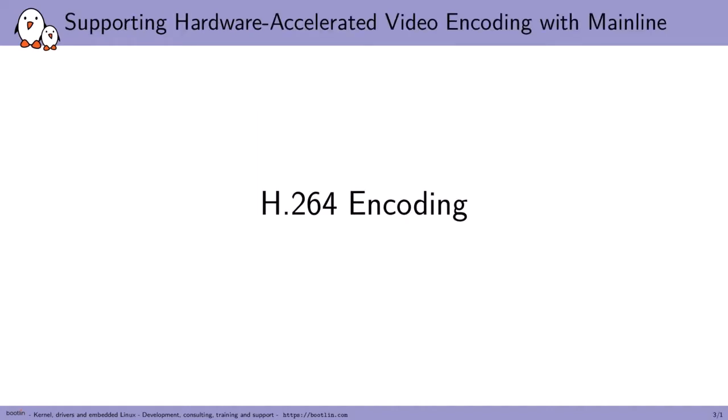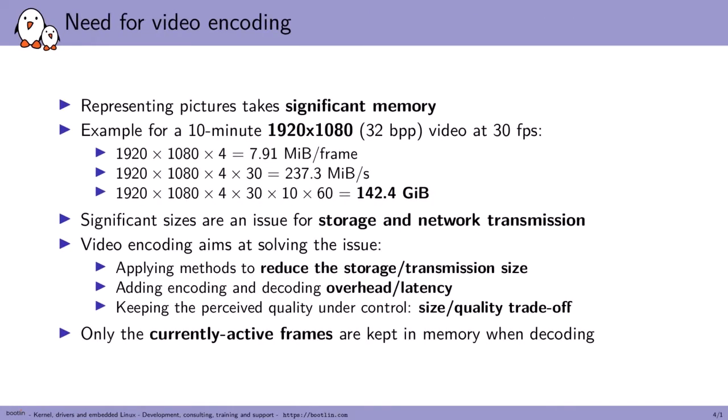So let's begin with H.264 encoding. Why do we need to encode video? The fact is that pictures are pretty big and take quite some size in memory. For a quick calculation: a 10-minute example at 1920×1080, with a 32 bits-per-pixel framebuffer at 30 frames per second, would be about 142 gigabytes just to store that 10-minute video. So we definitely want to compress that and reduce this size, which is the core point of video encoding. Doing this requires some heavy calculations, so there's always overhead to encoding and decoding, and the main concern is keeping good visual quality for a given size.